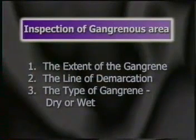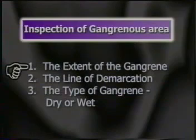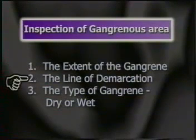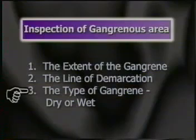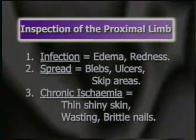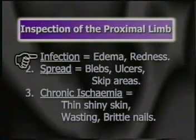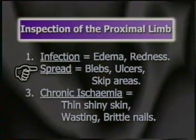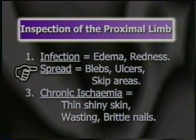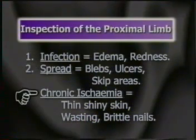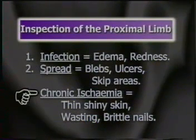To revise: first inspect the gangrenous area — note the extent of the gangrene, the line of demarcation, and the type of gangrene, whether dry or wet. Then examine the proximal limb for evidence of infection, i.e. edema and redness; for evidence of spread of gangrene, i.e. blebs, ulcerations and skip areas; and evidence of chronic ischemia — thin, shiny skin with scanty hair, wasting and brittle nails with transverse ridges.